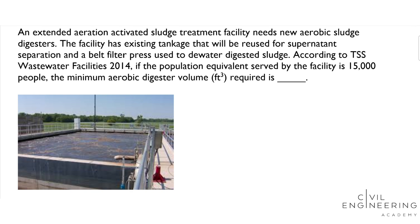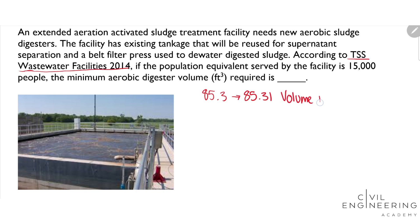I've included a picture of what an aerobic activated sludge treatment facility looks like — it's basically just an aeration basin with some sludge and aerators to provide oxygen to feed the sludge and the microbes that break it down. If you don't know what the aeration basin is, that's okay, because for this problem we really just need to look at the spec TSS 2014 — make sure you have the right version. We look in that spec at section 85.3, then section 85.31, and we want to look at the volume required table.